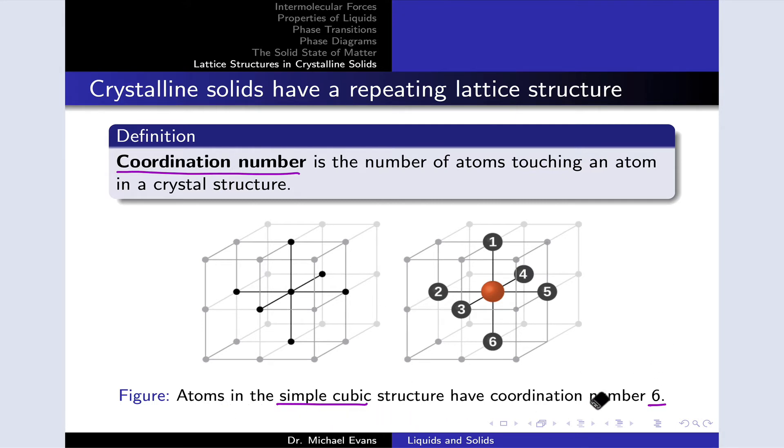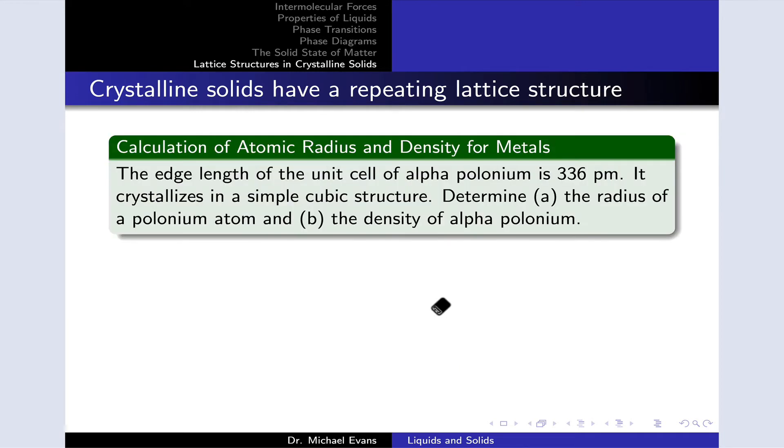So atoms in the simple cubic lattice have a coordination number of six. Earlier I alluded to the fact that we can use unit cells to calculate the density of a macroscopic crystalline material just by calculating the density of the unit cell itself in the appropriate units. And this problem is an example of this. The problem tells us that the edge length of the unit cell of alpha polonium, one of the forms of solid polonium, is 336 picometers, and that this substance crystallizes in a simple cubic structure. It wants us to determine the radius of a polonium atom, which is a relatively easy problem, and the density of alpha polonium, which is somewhat harder but is very intuitive if we understand how to think about working with unit cells.